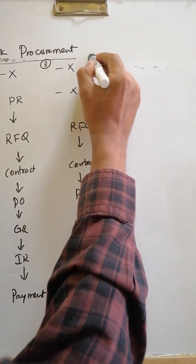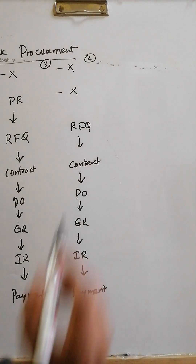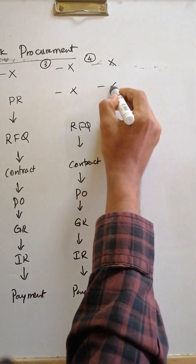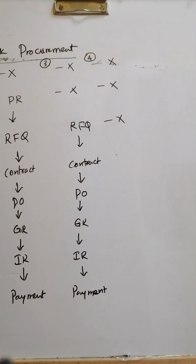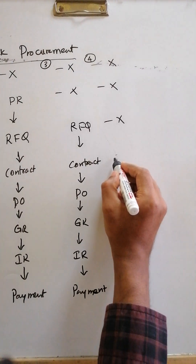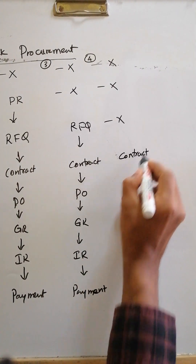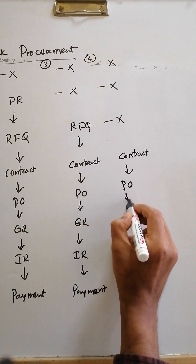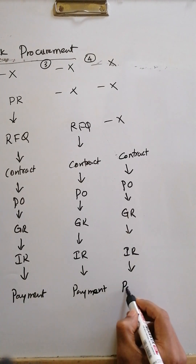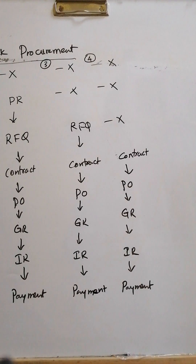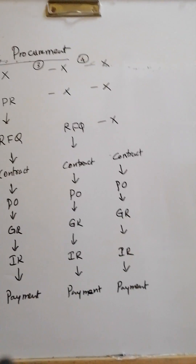Case 4: No MRP run, no PR, no RFQ. The company already knows that a specific vendor is providing good materials with reliable delivery, so they directly create a contract — a quantity or value contract — with that vendor. The process starts with the contract, then PO, GR, IR, and payment. They skip everything up to the contract stage.